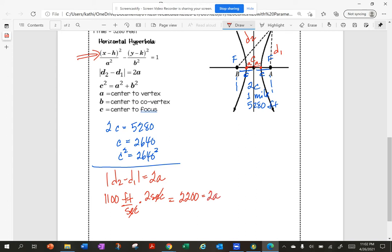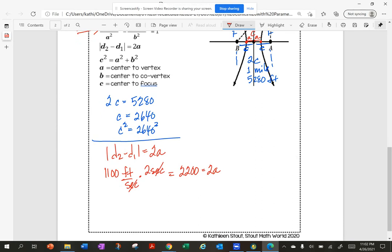So dividing both sides by 2, I get A equals 1,100. So A squared is 1,100 squared.